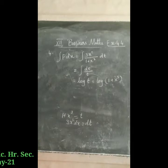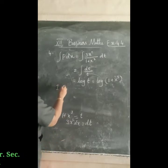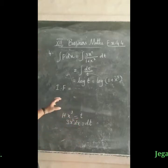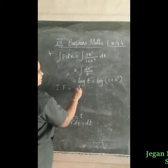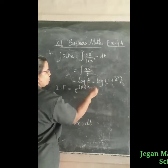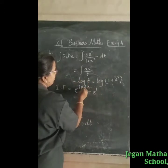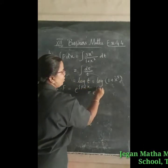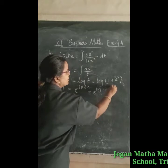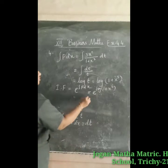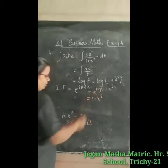Now we have to find the integrating factor. The integrating factor is equal to e raised to the power of the integral of p dx. That is e power log(1 + x³), and e^(log x) = x, so the integrating factor is equal to (1 + x³).